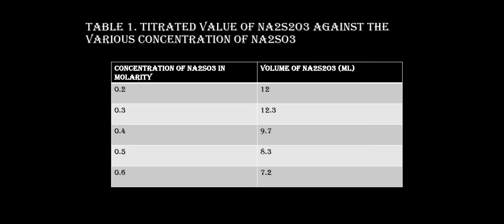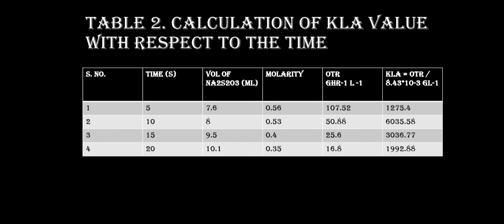Table 1 shows the titrated values of Na₂S₂O₃ sodium thiosulphate against various concentrations of Na₂SO₃. The concentration of Na₂SO₃ in molarity and volume of Na₂S₂O₃ in milliliters are recorded: at 0.2 M the volume is 12 ml, at 0.3 M it is 12.3 ml, at 0.4 M it is 9.7 ml, and at 0.5 M it is 7.2 ml. The values first increase and then decrease.